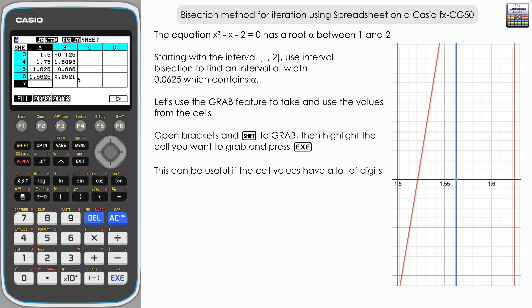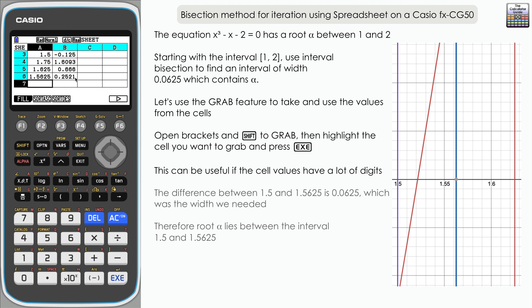Here we have the result: 1.5625 is the x value, and 0.2521 is the result from the function — positive. From the graph the root lies between the interval 1.5 and 1.5625. The difference between 1.5 and 1.5625 is 0.0625, which is the width we were aiming for. So the conclusion is that the root alpha lies in the interval 1.5 to 1.5625.